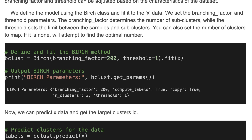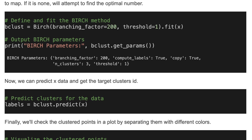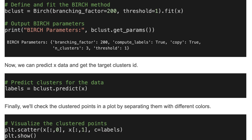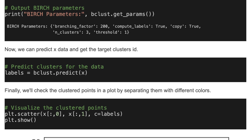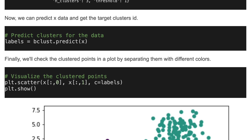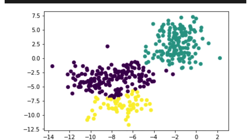You can see the parameters of this model. Now we can predict X data and get the target cluster IDs. Then we visualize the output in a scatterplot. Here is the result — we clustered our data into three clusters. It's automatically clustered; the model defined the number of clusters as three.